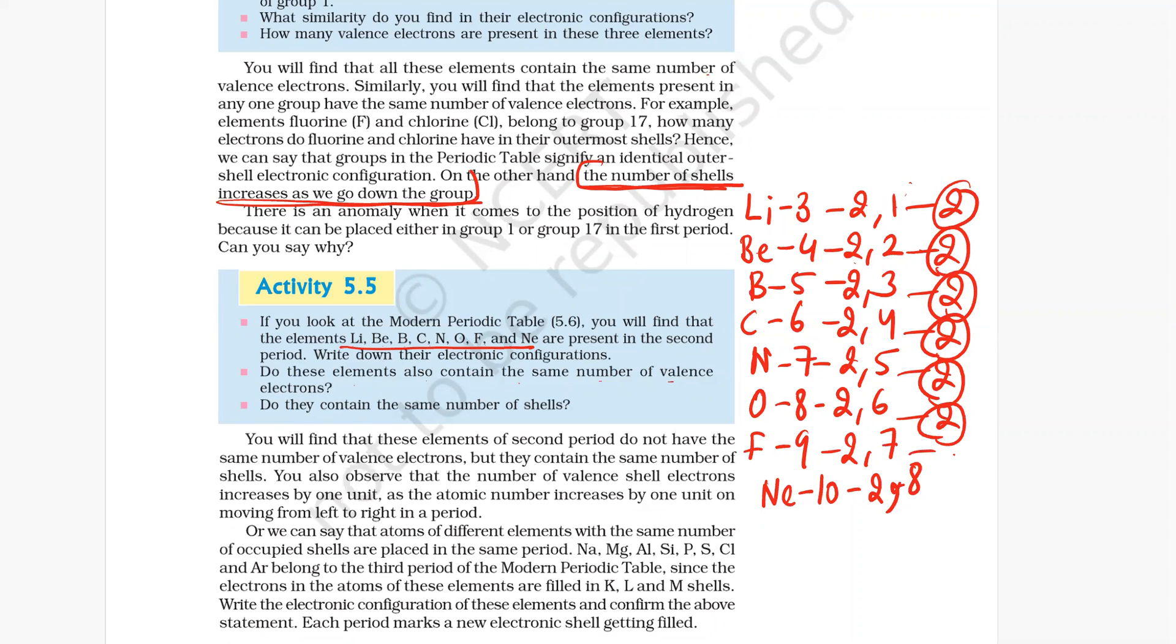But electronic configuration is different. In a particular group, electronic configuration is the same, but as we move down the group, number of shells increases.